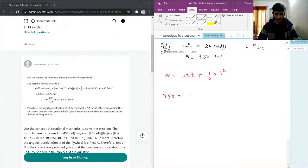We'll just substitute the values. 450 = 20×9 + ½α×9². This will be 450 - 180 = ½α×81.